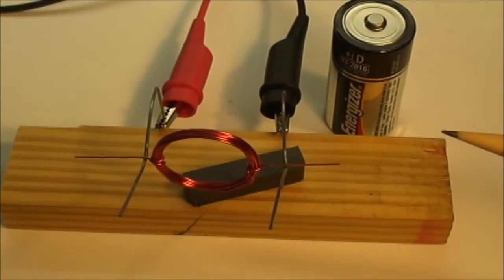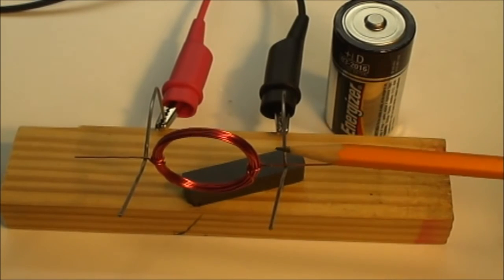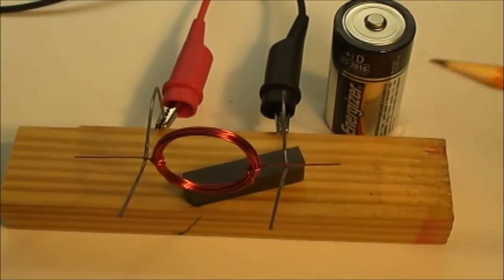For each turn of wire, we get an additional increase in magnetic field as we increase the voltage across this magnetic field. If we take loop turns off, the magnetic field gets weaker.